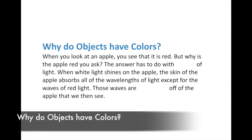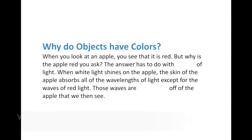Why do objects have color? Why is an apple red, for instance? When white light shines on the apple, what happens is the skin of the apple will actually absorb all the wavelengths of light except for the red. The red bounces off - or reflects - and that red light goes into our eye and we can see that.